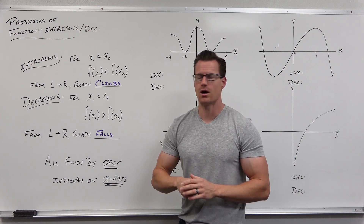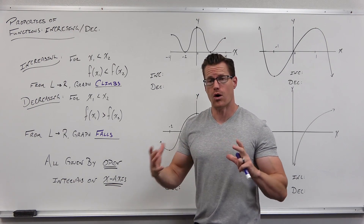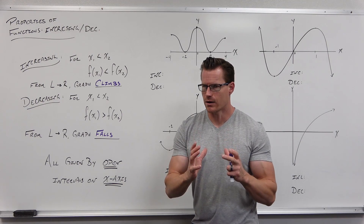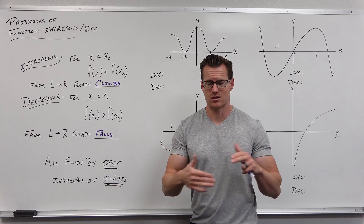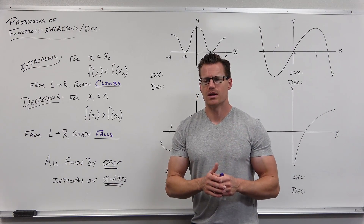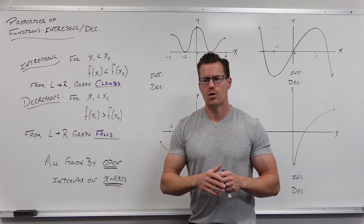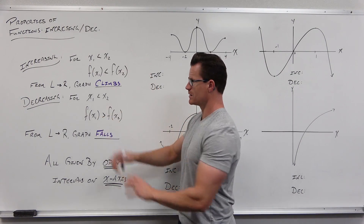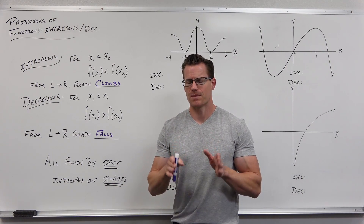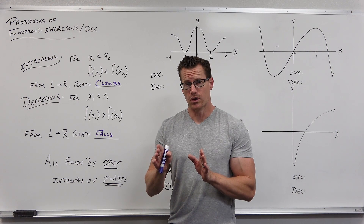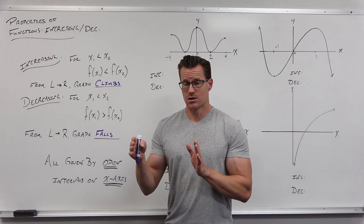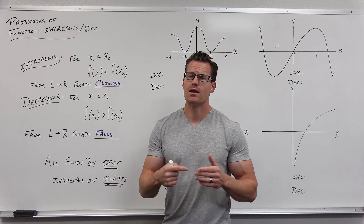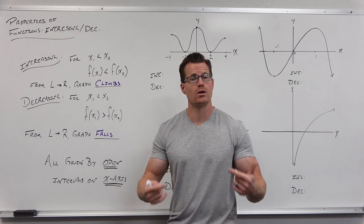All of our intervals are always open for increasing and decreasing, and they're always given by the x-axis. Remember how a lot of things in graphs are determined by the x-axis — domain is an x-axis idea, where we're above or below the x-axis is an x-axis idea. So what increasing and decreasing really asks in English is this: increasing says tell me the part of the x-axis where when you look from left to right, your graph is climbing. Decreasing says tell me the part of the x-axis where if you look from left to right, your graph is falling. That is what increasing and decreasing mean, as simple as I can make it. So we're going to look at some intervals using interval notation today.